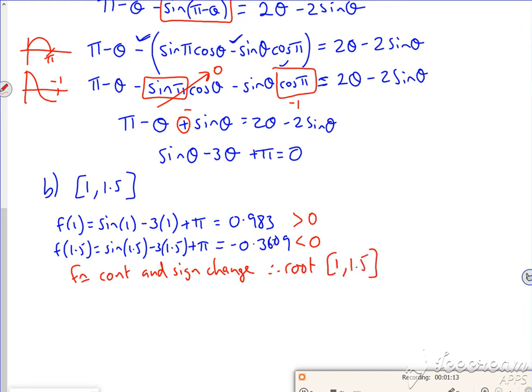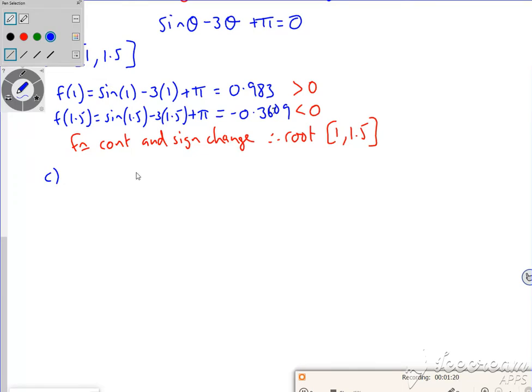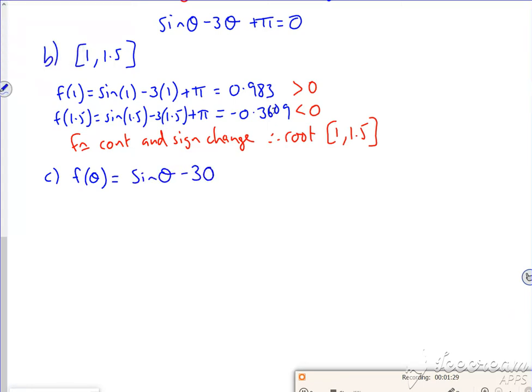Let's have a look at C. So C says use Newton-Raphson starting with θ₁. My f of θ is sine θ minus 3θ plus π. My f' of θ is cos θ minus 3. So θₙ₊₁ equals θₙ minus sine θ minus 3θ plus π over cos θ minus 3.